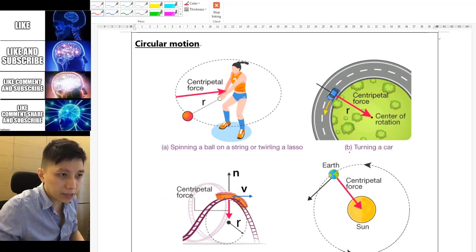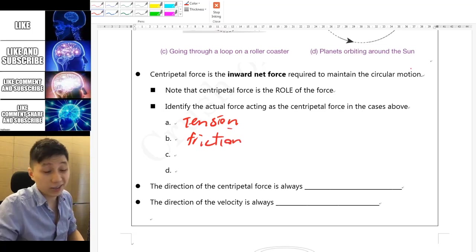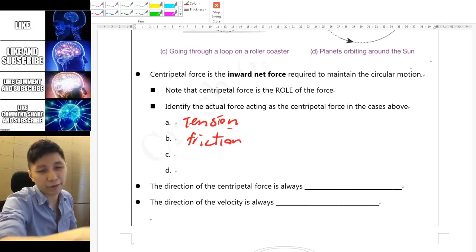B is the car making a turn and that is using the friction. So once again without friction then the car will just slide through it.